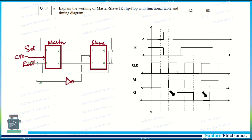Explain the working of master-slave JK flip-flop with functional table and timing diagram. The master JK flip-flop is operated with the positive edge of the clock. A NOT gate provides the reversed clock to the slave, so the slave operates with the negative edge. The master's output is taken as input to the slave, so the slave follows after half a clock cycle. In the waveform, the slave output goes high after some delay following the master output.